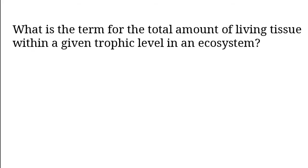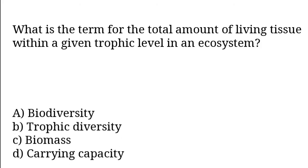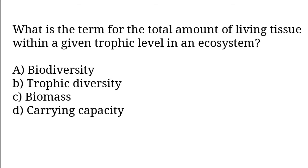What is the term for the total amount of living tissue within a given trophic level in an ecosystem? Options: Biodiversity, trophic diversity, biomass, carrying capacity. So the correct answer is option C. Biomass is the term for the total amount of living tissue within a given trophic level in an ecosystem.